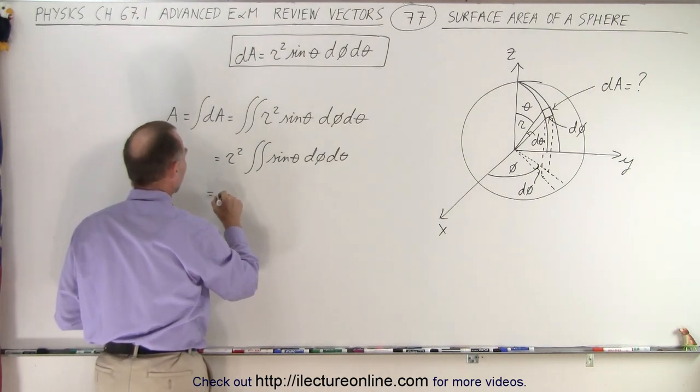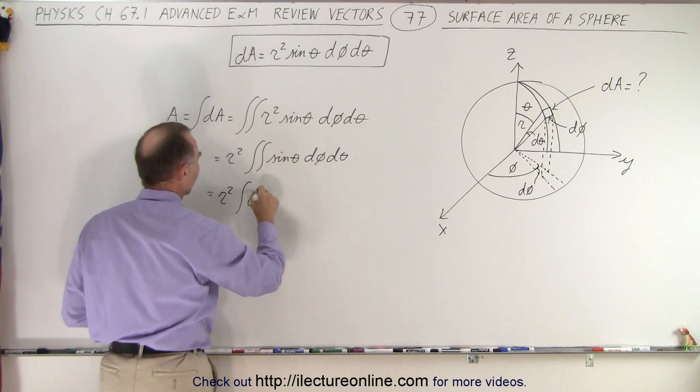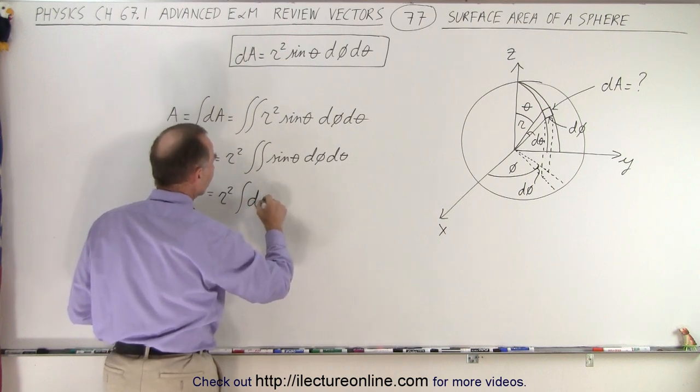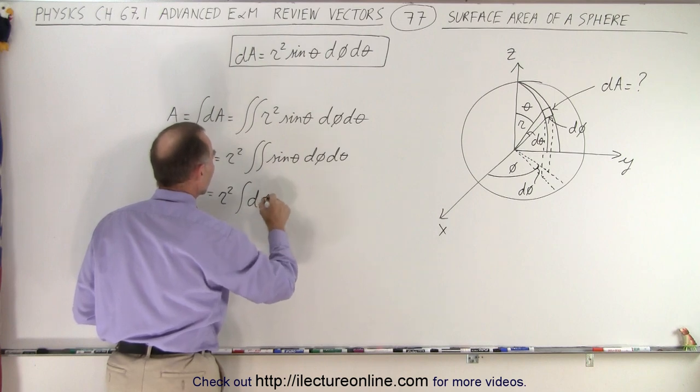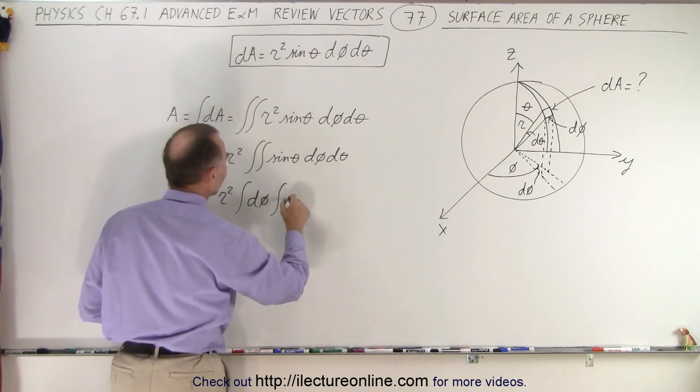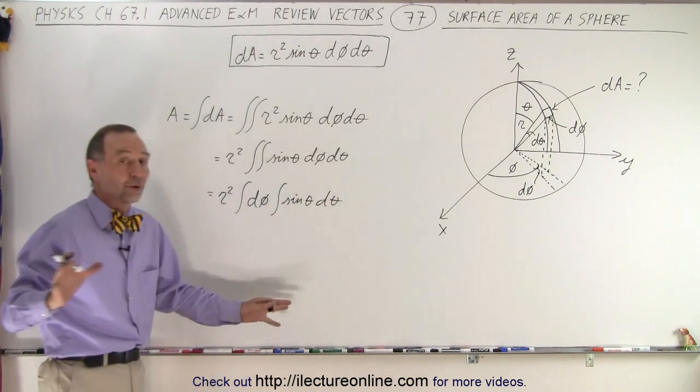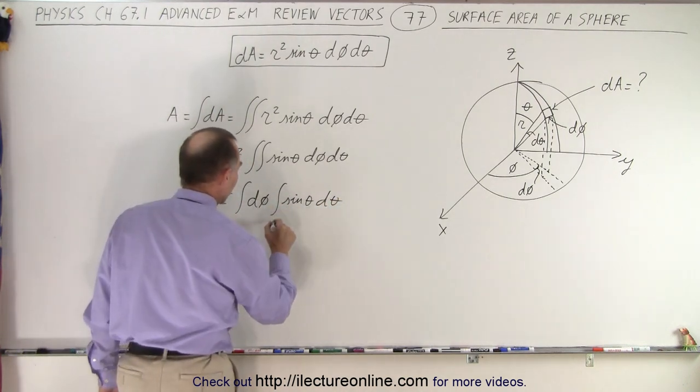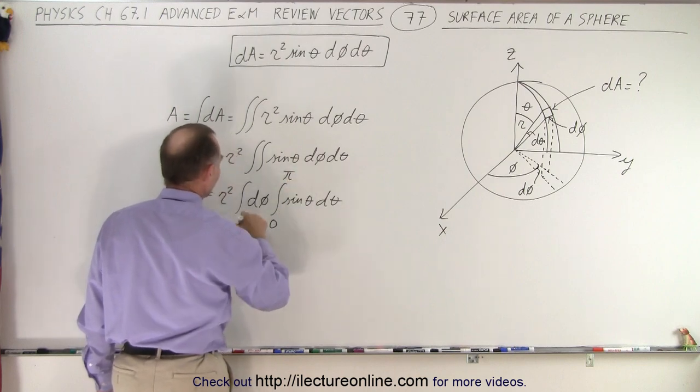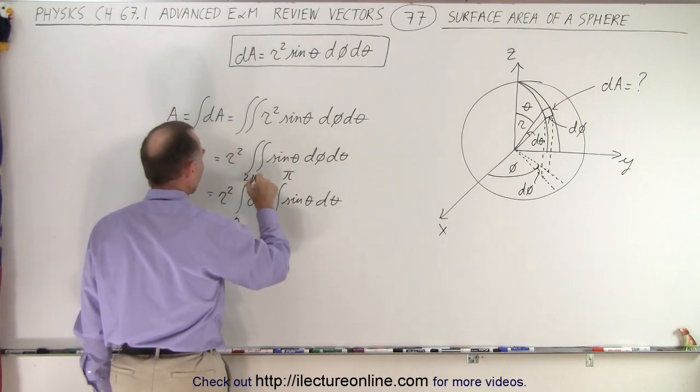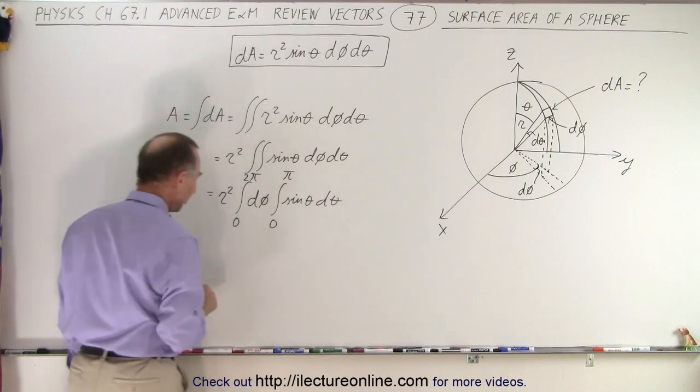So this looks as follows. This is equal to r squared times the integral... let's make this d phi times the integral of sine of theta d theta. It doesn't matter what order we do it in, we can do it in either order. So theta will go from 0 to π, and phi will go from 0 to 2π.